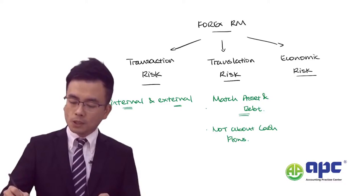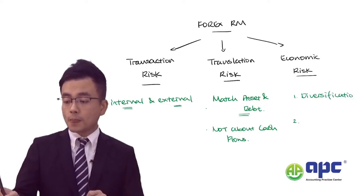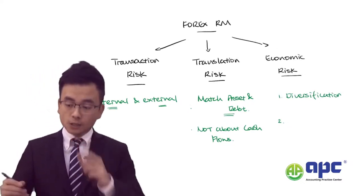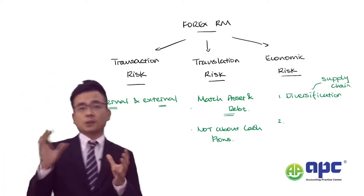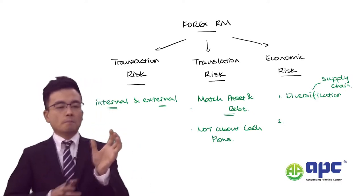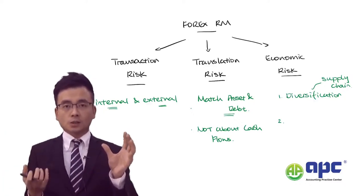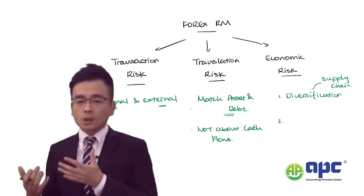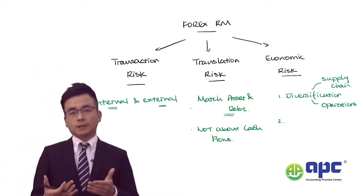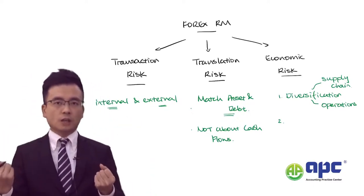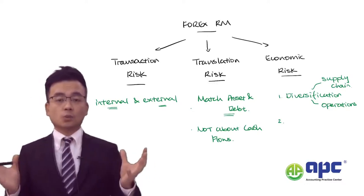For economic risk, we use two ways. Firstly, diversification — don't put all your eggs in one basket. Diversify your business using a different supply chain, set up factories in multiple countries, and receive income from multiple countries instead of just one. Diversify your operations across different product lines and multiple customer and supplier sources.